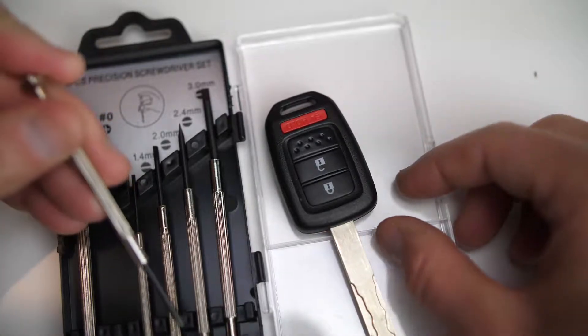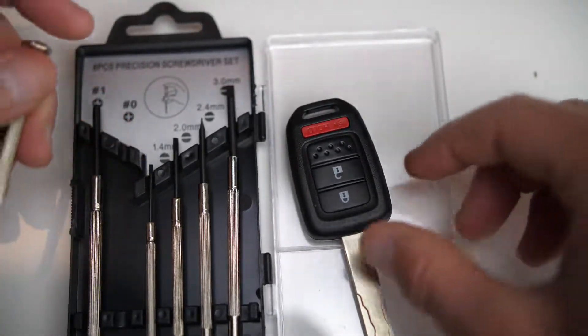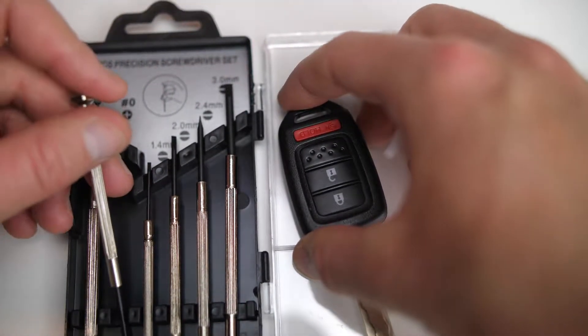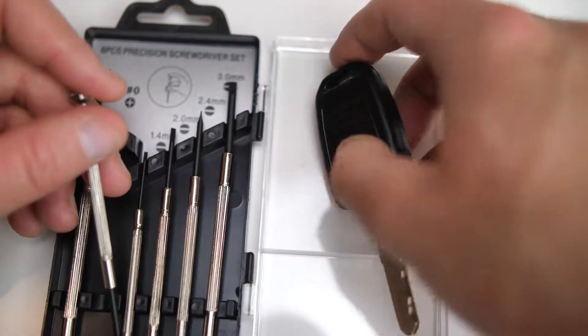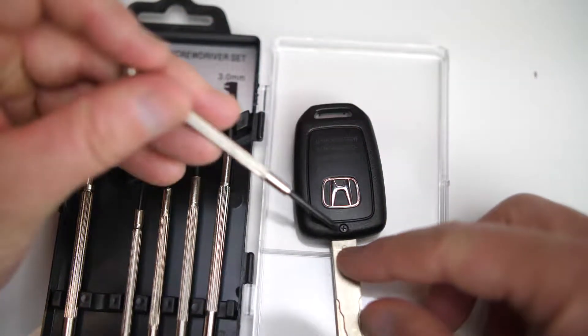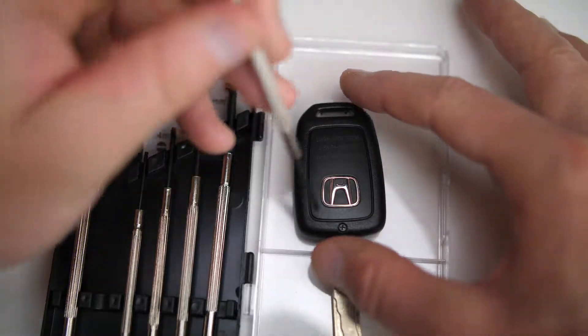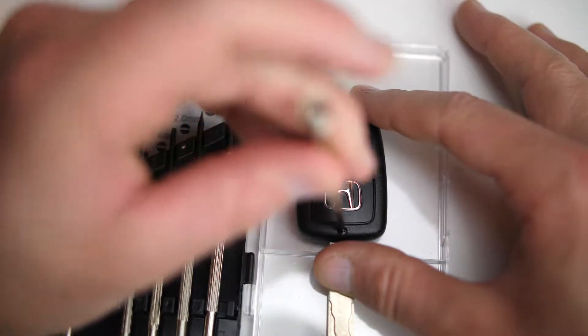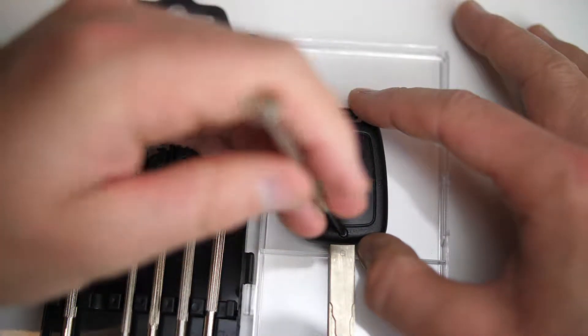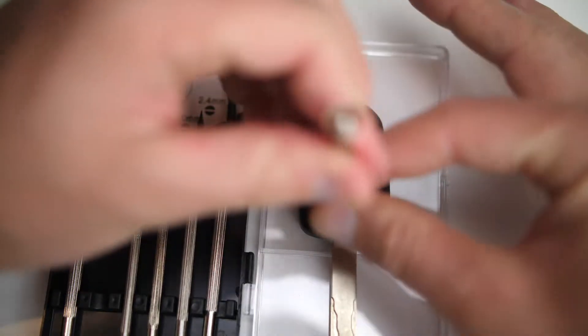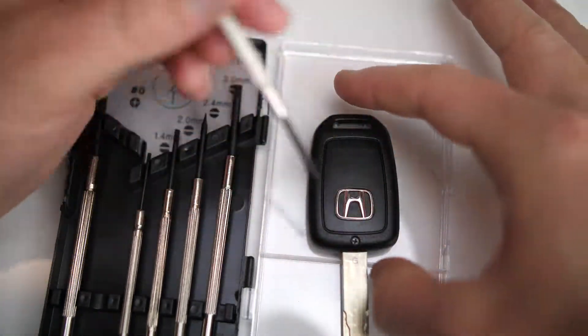The first thing you're going to need is a really small screwdriver set. You can get a precision screwdriver set for like four bucks on Amazon. Turn over the back of this key and there's a really tiny screw. This is the first step. The first time you do this can be kind of difficult. This one I've already loosened so I'll go pretty quick here, but the first time you're really going to need to dig in and get that screw out.